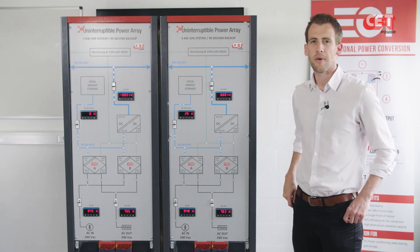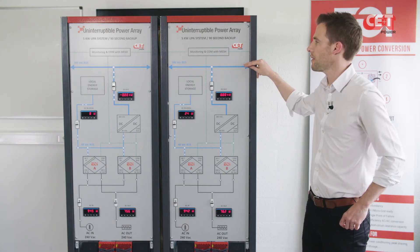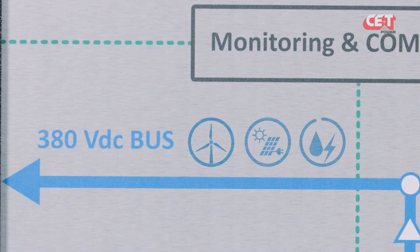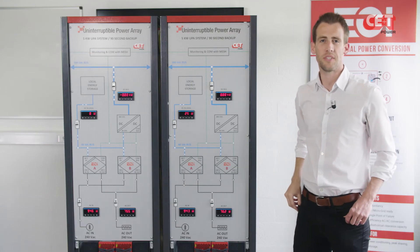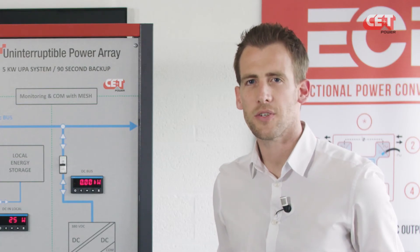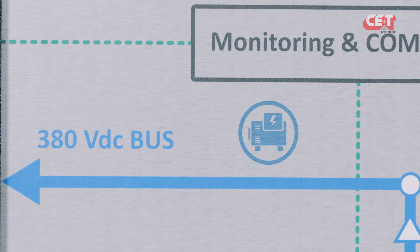Another advantage of the DC bus is that if you have any power source available, such as wind turbines, photovoltaics, or hydroelectric, you can directly plug them to the DC bus. Our intelligent software will manage the sources to reduce the power taken from the grid. You can also add a genset to the DC bus through rectifiers — no need for synchronization.